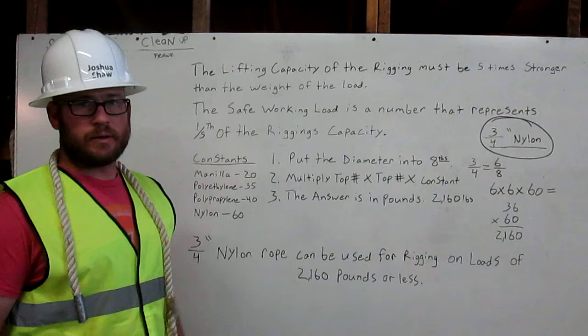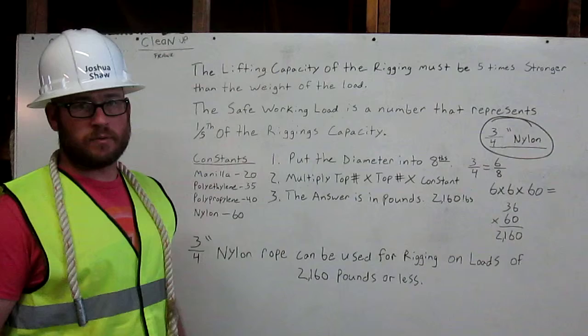I'm going to explain how to calculate the safe working load for a rope. This safe working load is a number that represents one-fifth of the rigging's capacity. Let me explain.